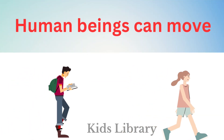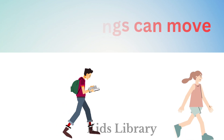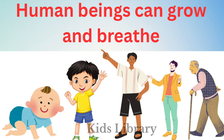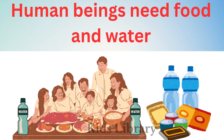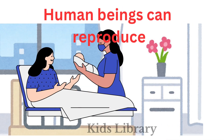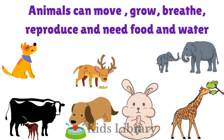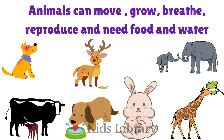Human beings can move, can grow and breathe, need food and water, and can reproduce. Animals can also move, grow, breathe, reproduce, and need food and water.